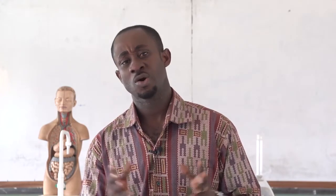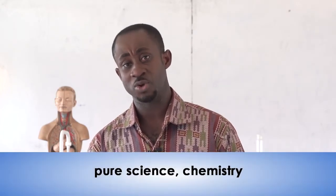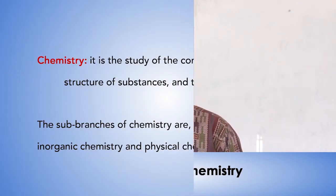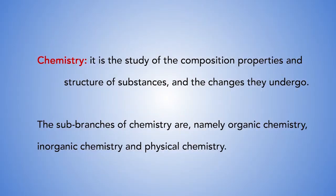If you consider the definitions treated above, the common words that run through are plants and animals, which are living organisms. Let us look at another branch of pure science, which is chemistry. It is the study of the composition, properties and structure of substances and the changes they undergo. The sub-branches of chemistry are namely organic chemistry, inorganic chemistry and physical chemistry.